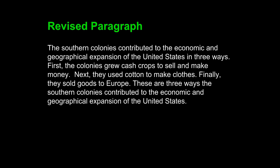The revised paragraph looks like this: "The southern colonies contributed to the economic and geographical expansion of the United States in three ways. First, the colonies grew cash crops to sell and make money. Next, they used cotton to make clothes. Finally, they sold goods to Europe. These are three ways the southern colonies contributed to the economic and geographical expansion of the United States."